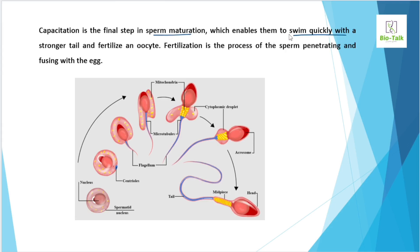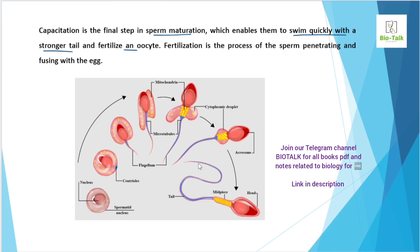Capacitation allows sperm to swim quickly with a stronger tail. The process is the final state in sperm maturation before fertilization. Sperm undergo capacitation to gain the ability to penetrate the egg. The general control of capacitation involves the proper tail activation, so the answer to the question is capacitation. Thank you for watching this video.